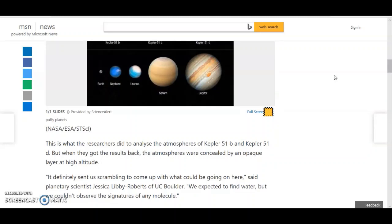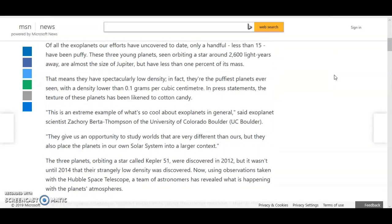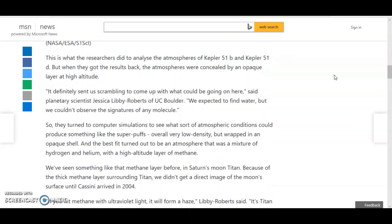This is what the researchers did to analyze the atmospheres of Kepler 51 B and 51 D. But when they got the results back, the atmospheres were concealed by an opaque layer at high altitude. And how the fuck would you know that, 2,600 light years away, okay? It definitely sends us scrambling to come up with what could be going on here, said planetary scientist Jessica Libby-Roberts of UC Boulder. We expected to find water, but we couldn't observe the signatures of any molecule.